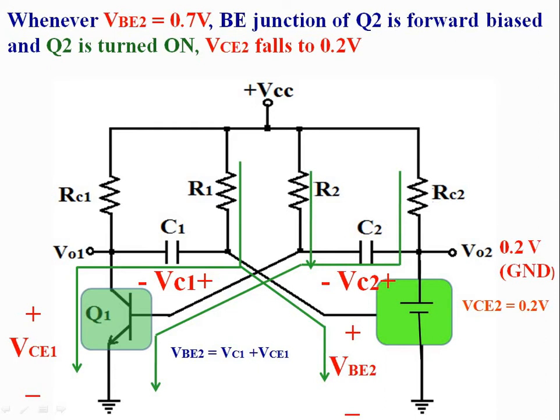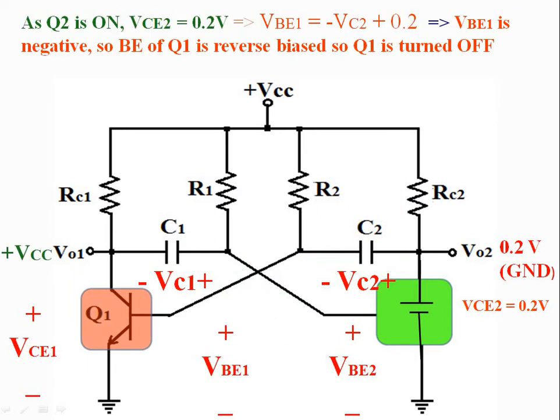VCE2 falls to 0.2V as VCE of an on transistor is equal to 0.2V. As Q2 is on, VCE2 is equal to 0.2V, and VBE1 is equal to minus VC2 plus 0.2V, meaning VBE1 is negative. So the base-emitter junction of transistor Q1 is reverse biased and transistor Q1 is turned off. As transistor Q1 is turned off, its collector voltage becomes plus VCC, and transistor Q2 remains in the on condition with its collector voltage equal to 0.2V.